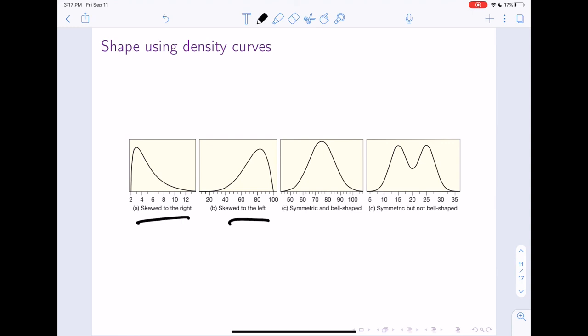And in this one right here, this one that's symmetric and bell-shaped, this one does not have any skew, right? It is perfectly like a bell. And then this one over here is symmetric but not bell-shaped, the one that's all the way to the right. This one is symmetric but not bell-shaped, but this one is symmetric and bell-shaped. See how the words symmetric and skew do not appear together? Make sure you don't do that, too.